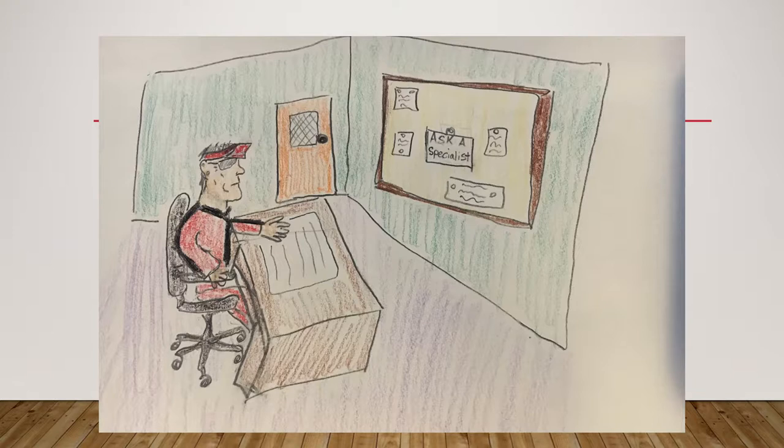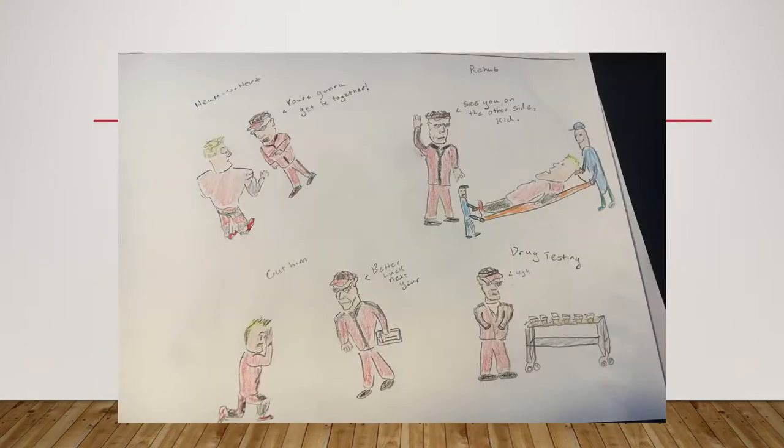He begins brainstorming ideas. He is in a study, sees an ad for advice on how to deal with these types of situations, and considers using the Delphi technique. However, he believes that experts in that sort of field are hacks and is not interested in what they have to say. Thomas comes up with a few options: he could have Peter committed to rehab, have a heart-to-heart with him, make the team do drug tests, or cut Peter from the team.